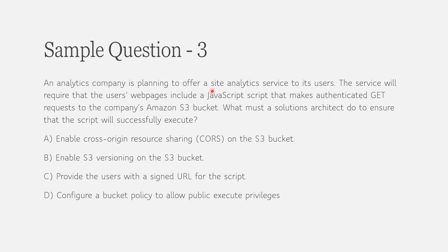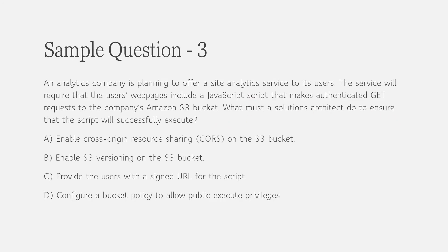Sample Question 3: An analytics company wants to run JavaScript on a site to make authenticated GET requests to an S3 bucket. Versioning doesn't help here. Signed URLs are for content sharing. Bucket policy is about authorization. The correct answer is Cross-Origin Resource Sharing (CORS). You need to be clear with all S3 concepts — look for keywords in the question, and that skill comes with practice.